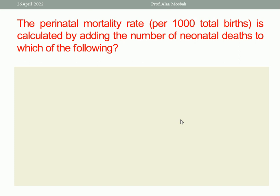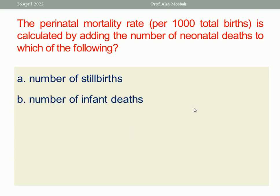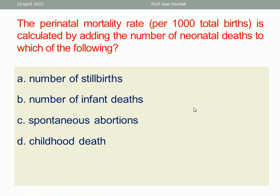Next question: The perinatal mortality rate per 1,000 total births is calculated by adding the number of neonatal deaths to which of the following? Options: number of stillbirths, number of infant deaths, spontaneous abortions, or childhood deaths. If I add neonatal deaths to stillbirths, it gives the perinatal mortality rate. So the best one response is number of stillbirths.